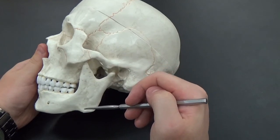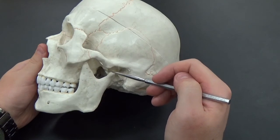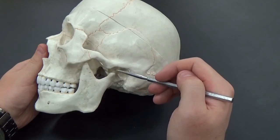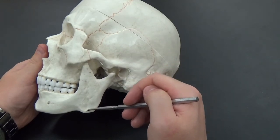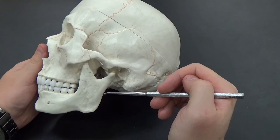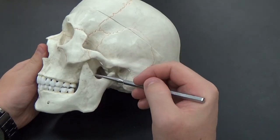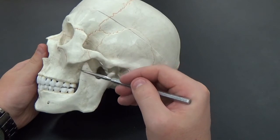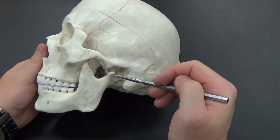The mandibular condyle, so that's what comes back here, connects to the back of the jaw. The mandibular angle is down here. The coronoid process is this front projection, so you have coronoid and mandibular condyle.